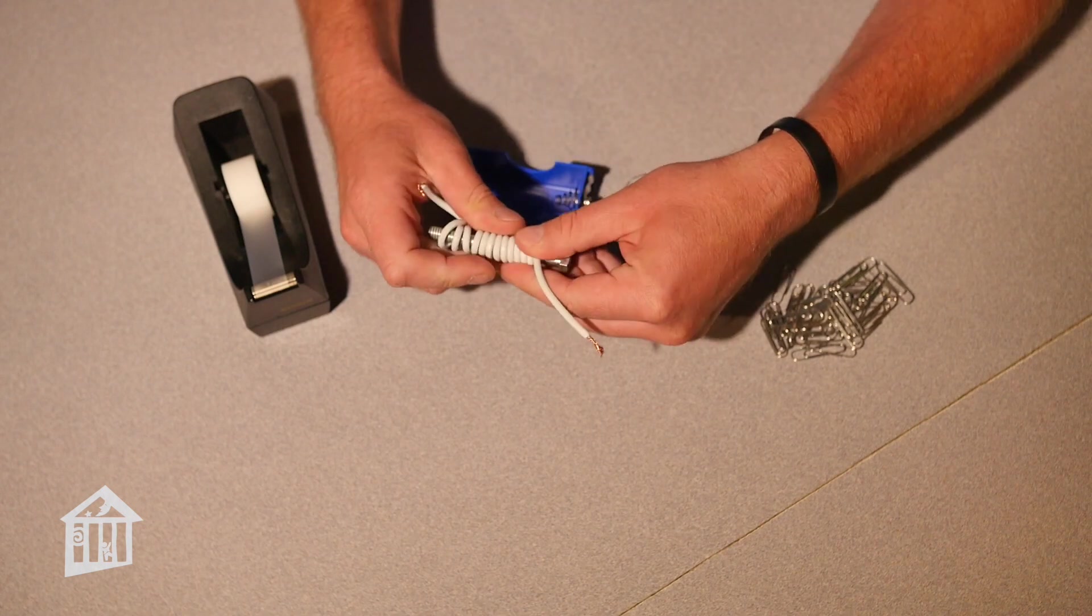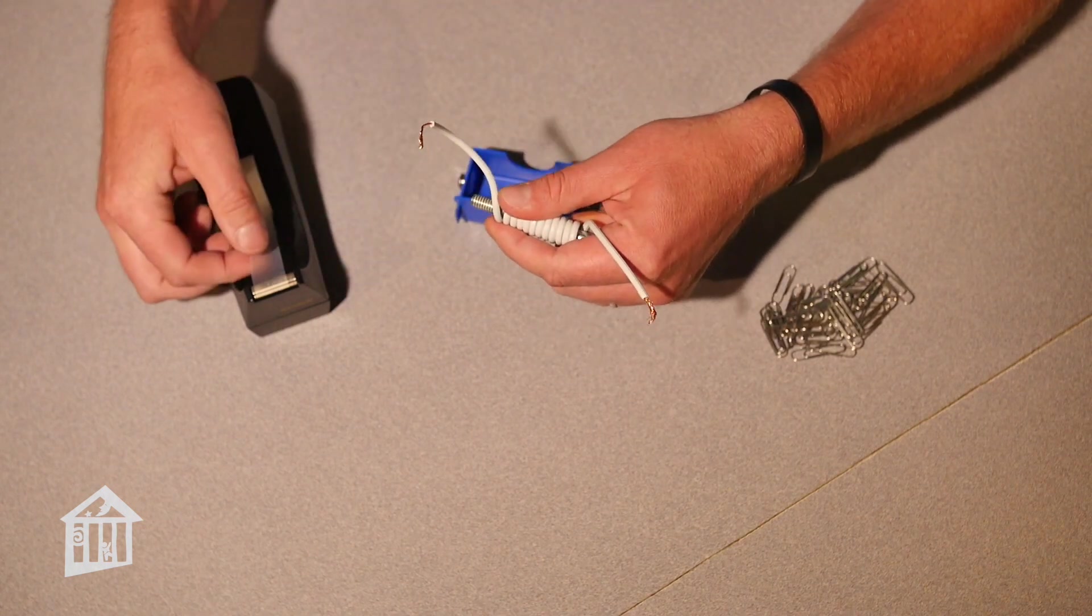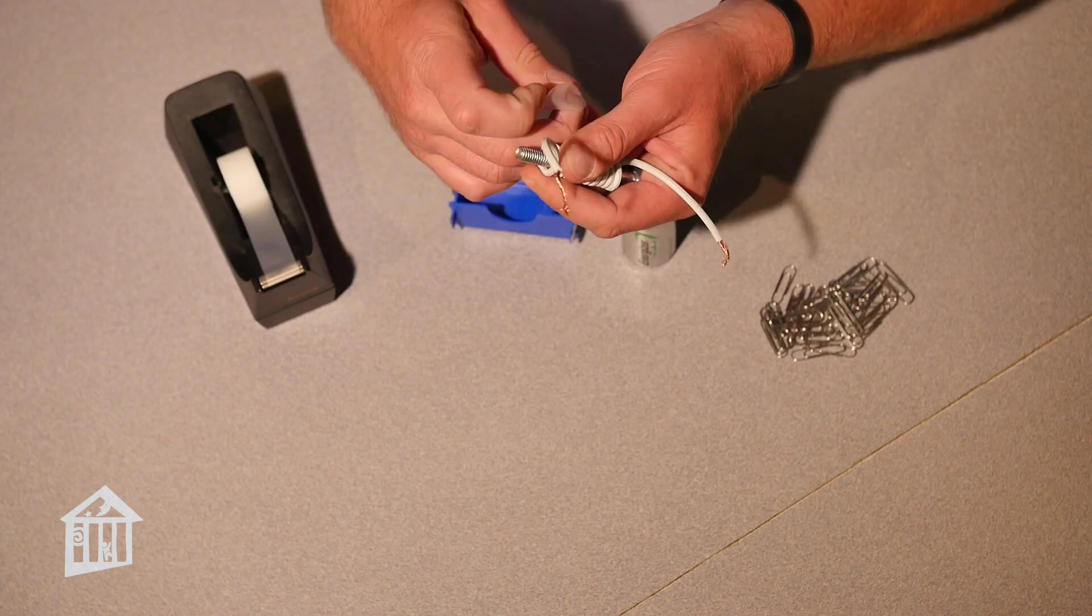Once you've finished your coiling, you're going to take some tape and secure your wire to the bolt.